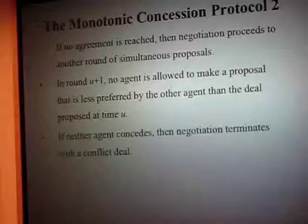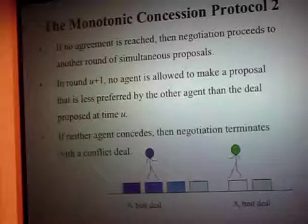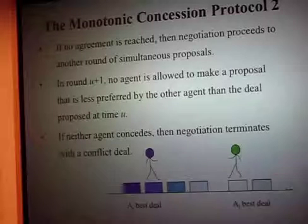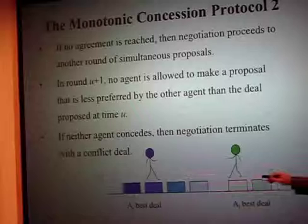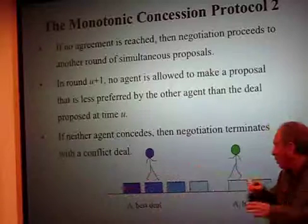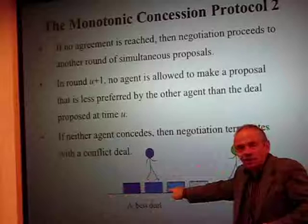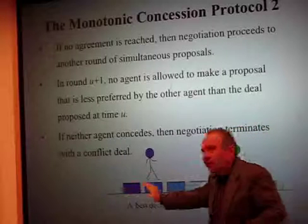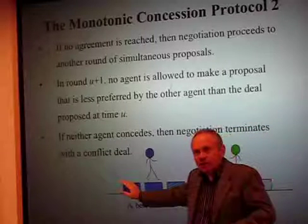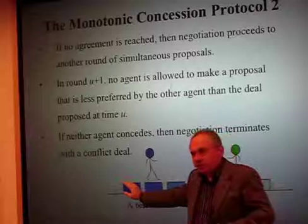If even as agents consent negotiation terminates with conflict. This is illustrated as follows: the best deal for one agent is somewhere at one end, the best deal for another agent is somewhere at the other end, and they try to find something in between. Whoever is stronger will end up closer to their best deal.